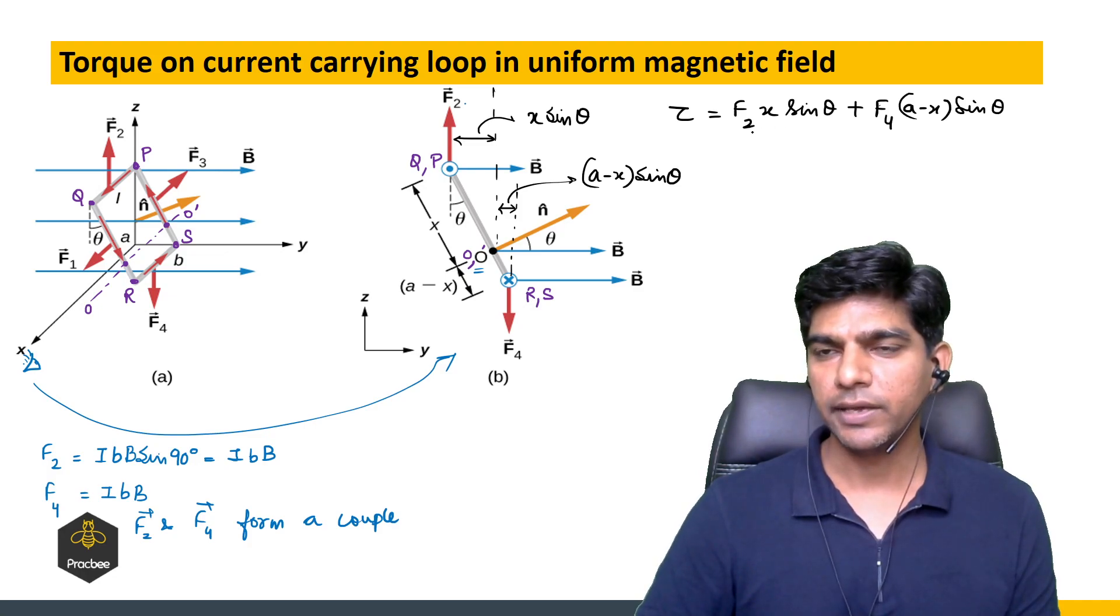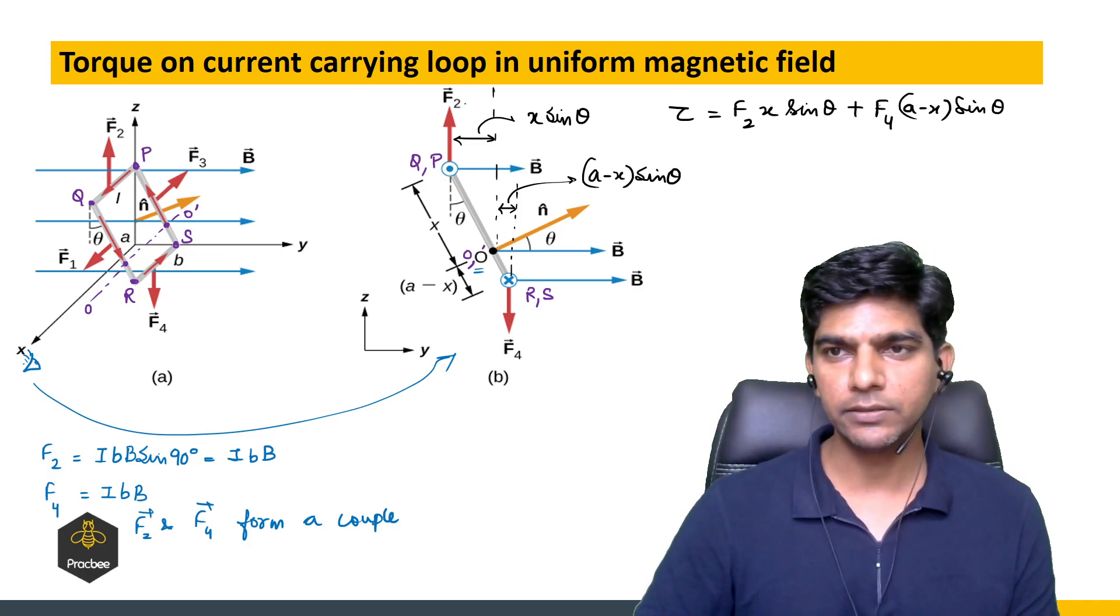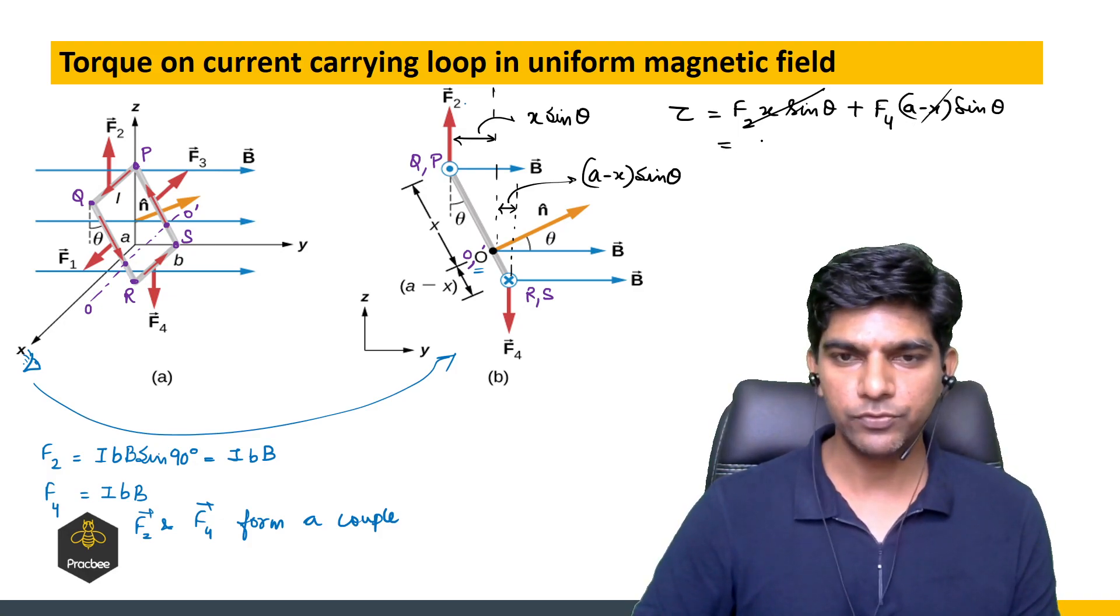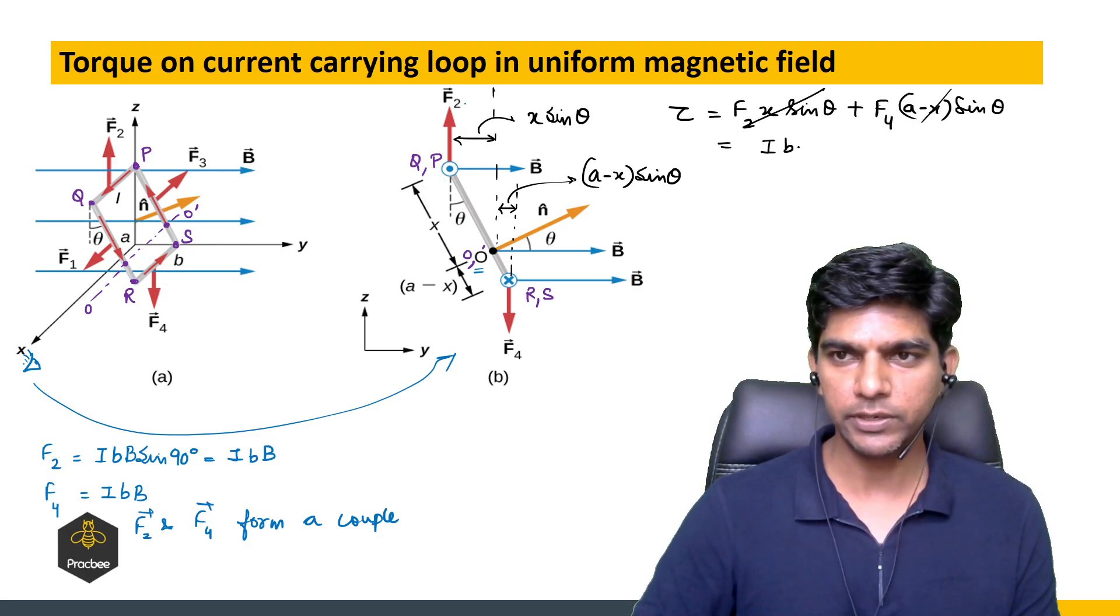Since F2 and F4 have the same magnitude, you can see F2 X sin theta will cancel out with F4 X sin theta. So this term will get cancelled out with this term and we get F4, which is I small b times capital B times A sin theta.